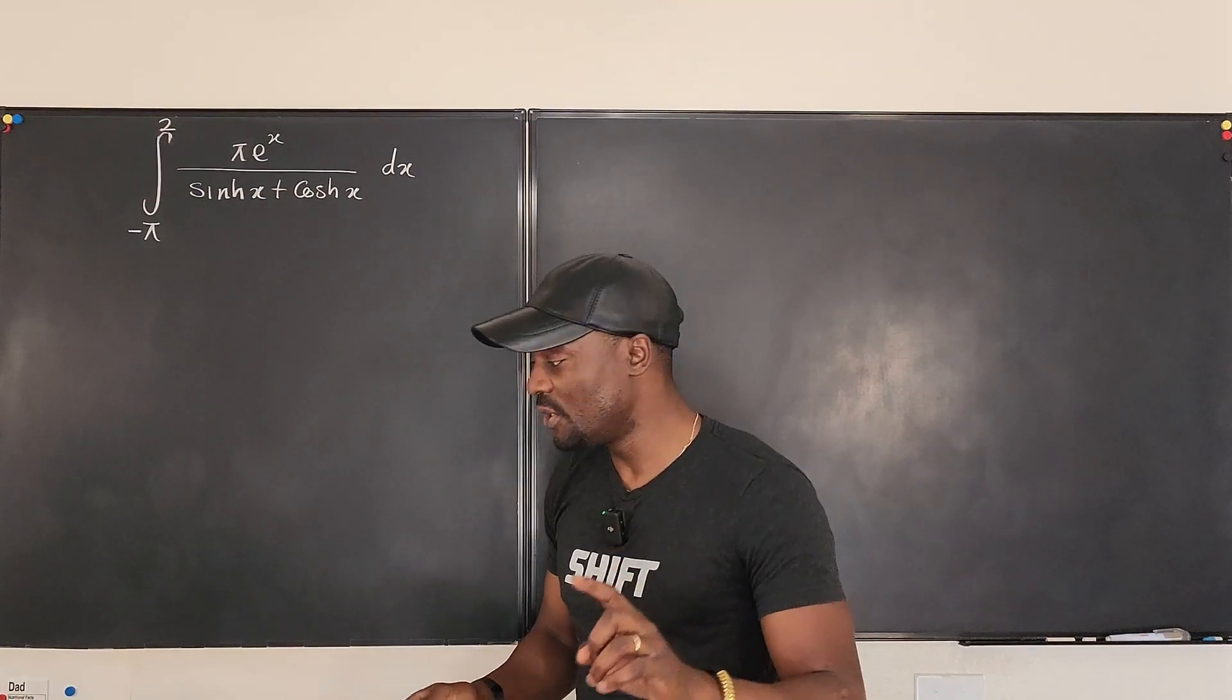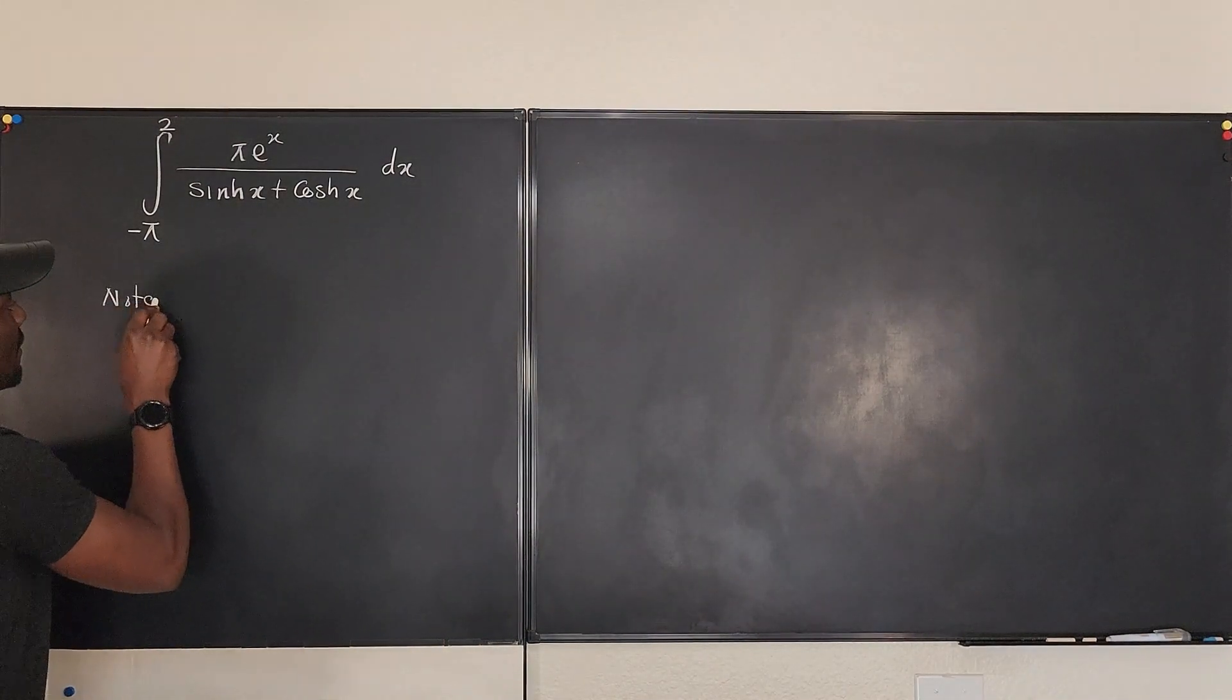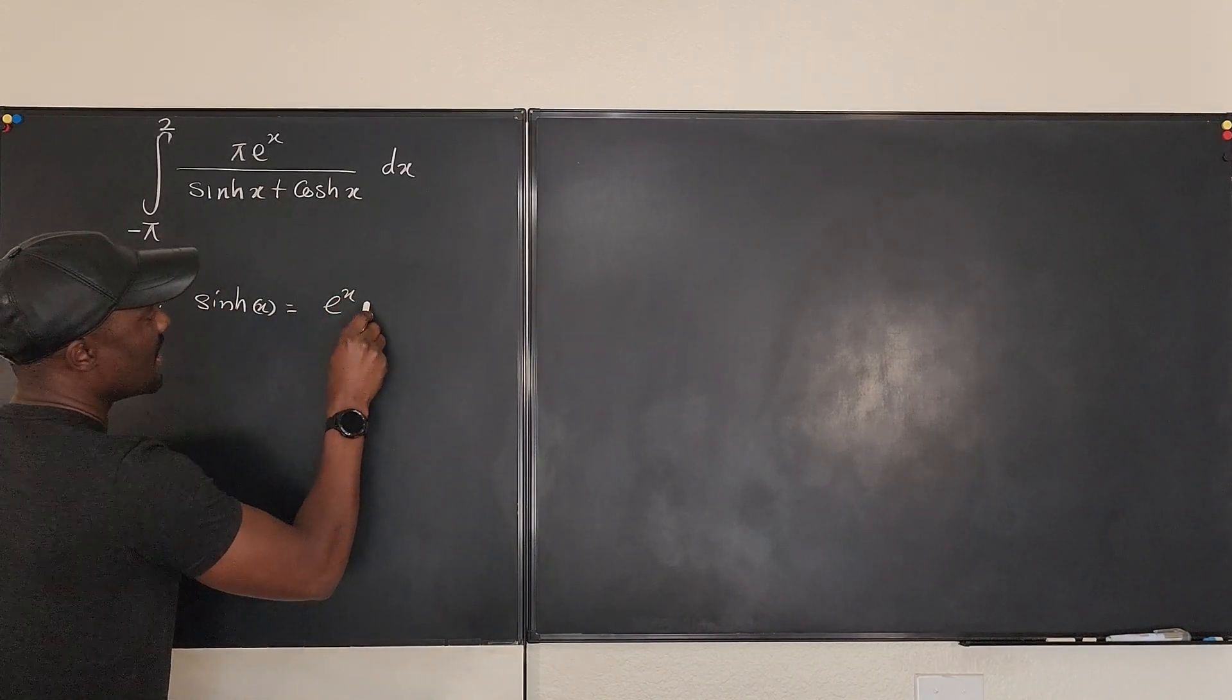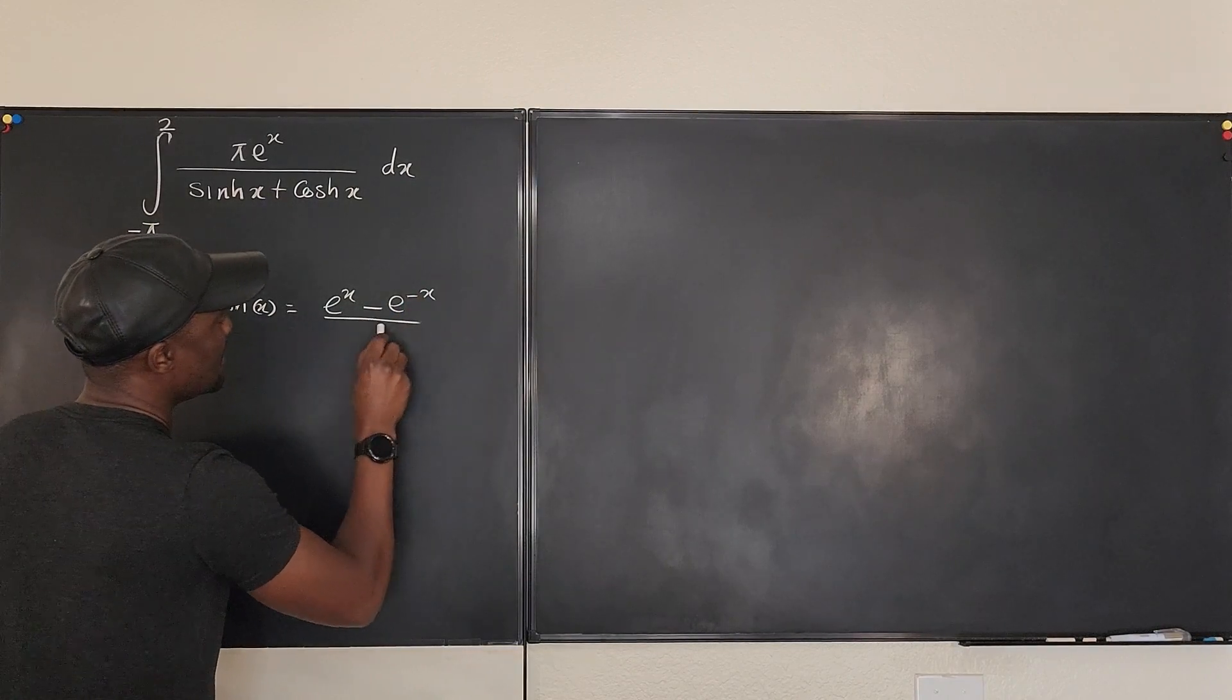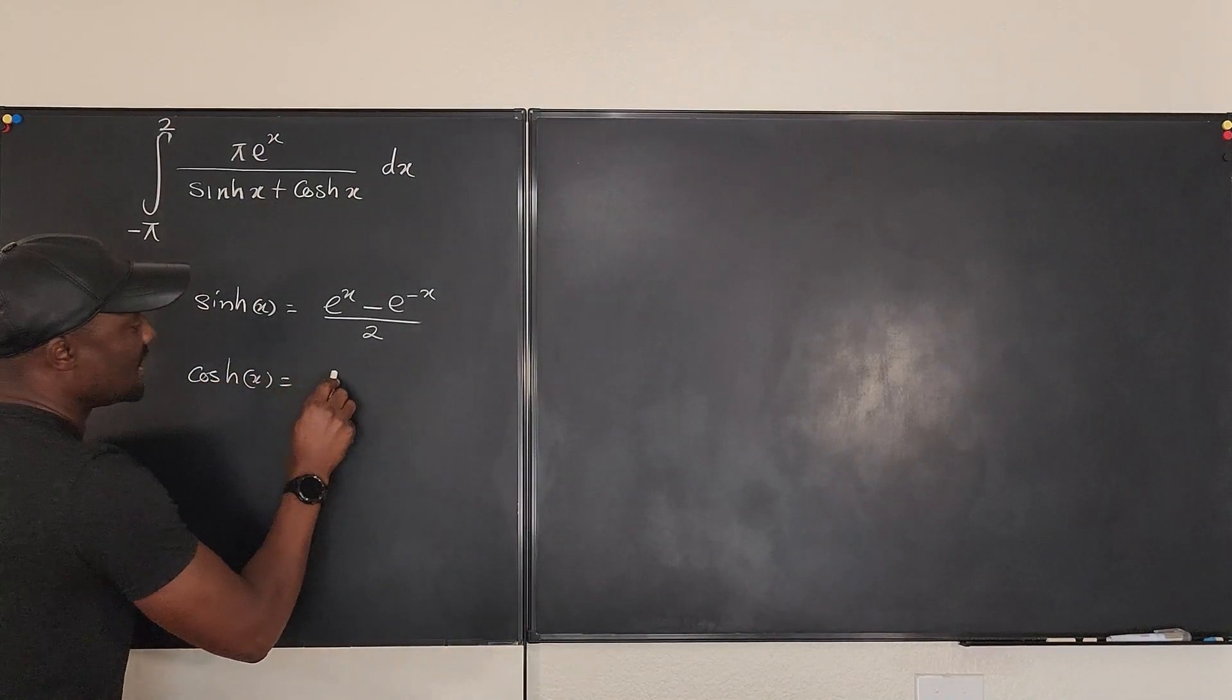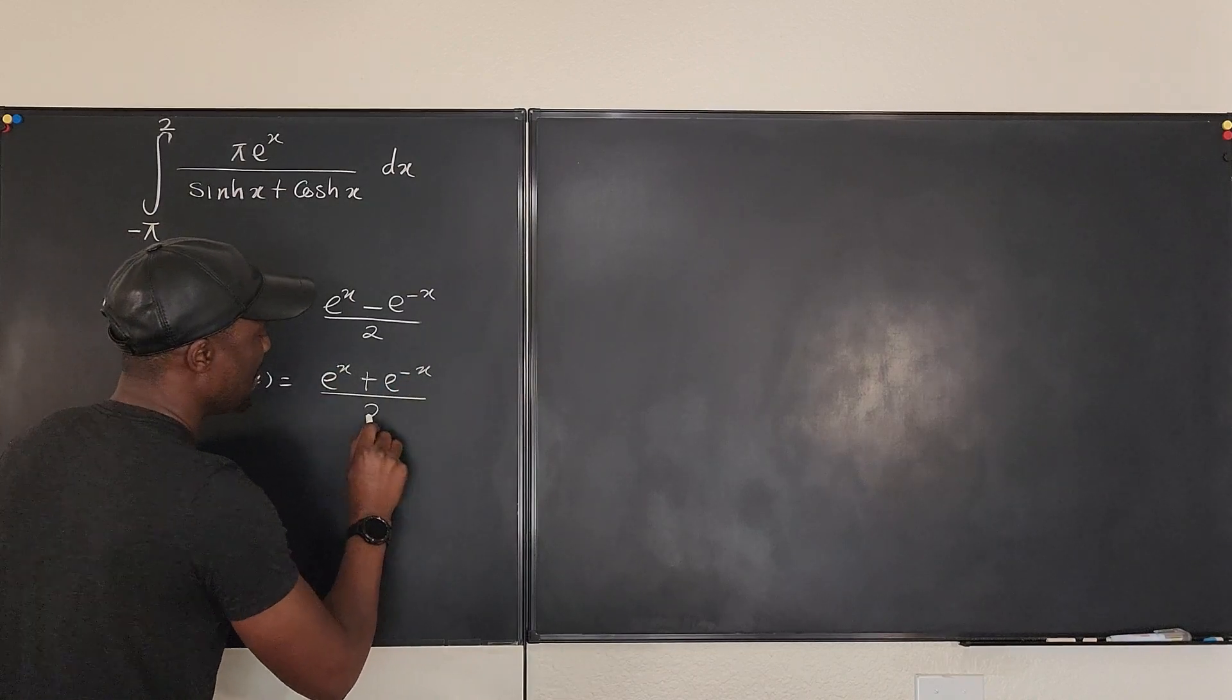So what I'm going to do is note that hyperbolic sine is basically e^x minus e^(-x) divided by two. And I know that hyperbolic cosine is e^x plus e^(-x) divided by two.